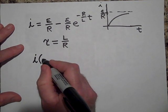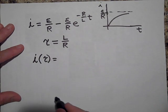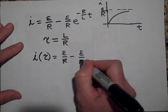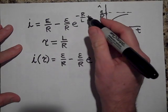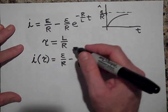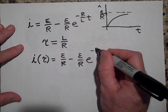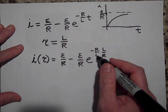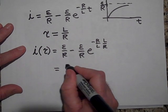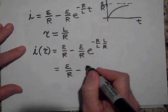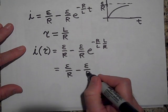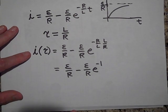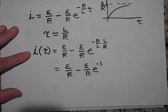Oh my gosh, when you put in L over R, sure enough, the I at one time constant is gonna be ε over R minus ε over R times e. And now if I put in one, and for T I put in L over R, I'm gonna get this—those cancel out and I'm left with this.